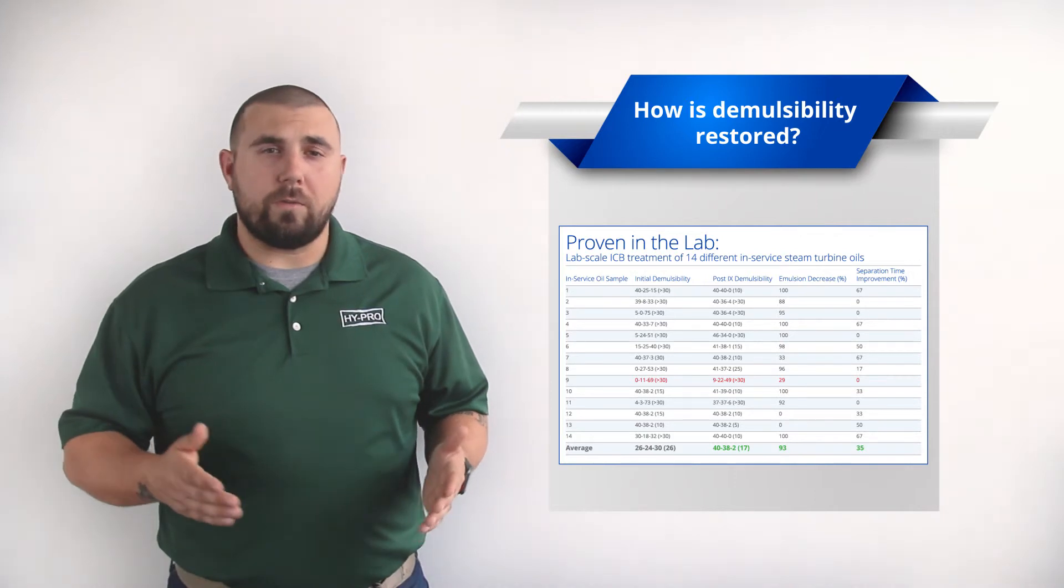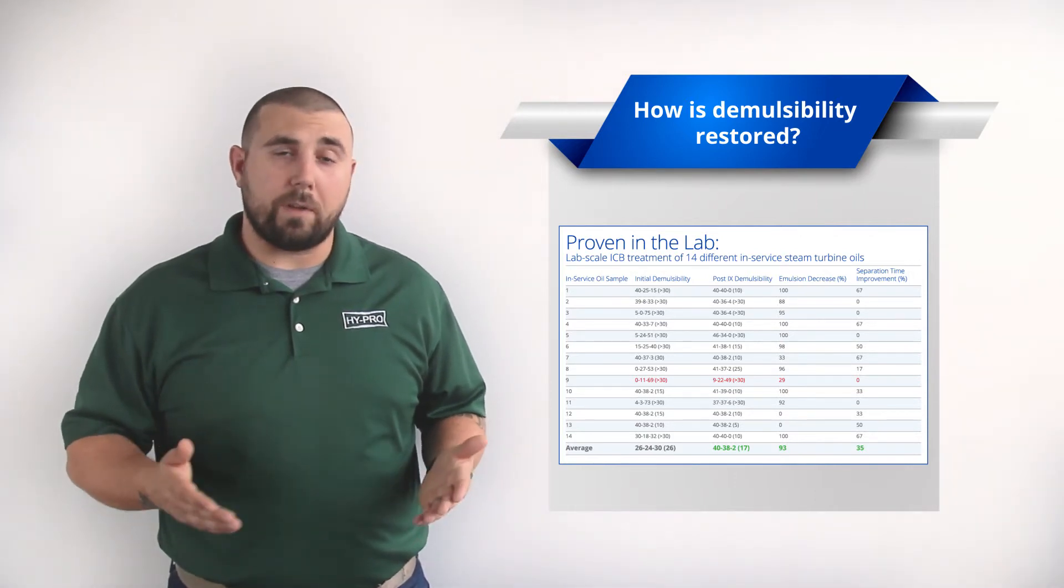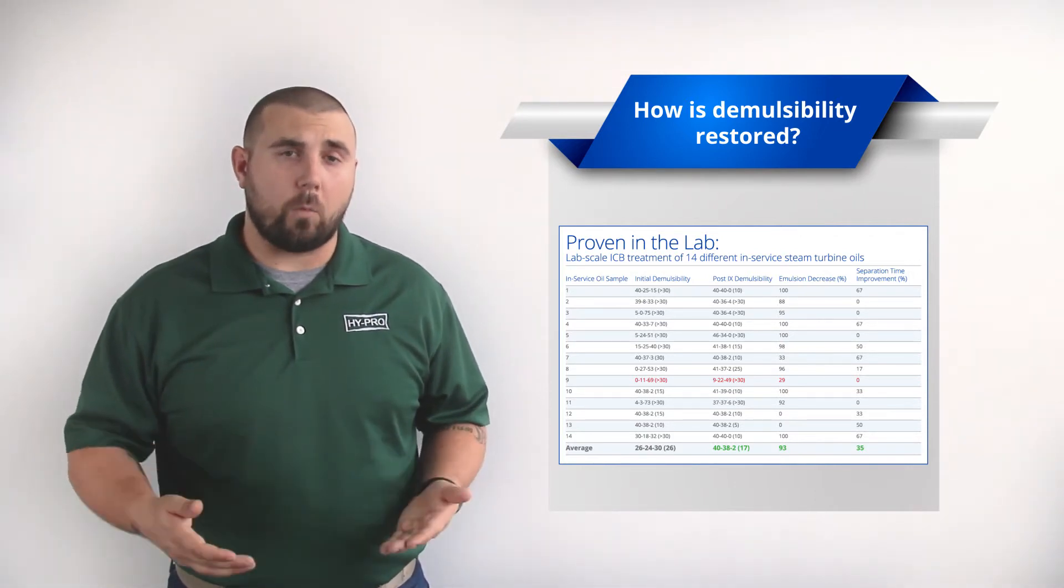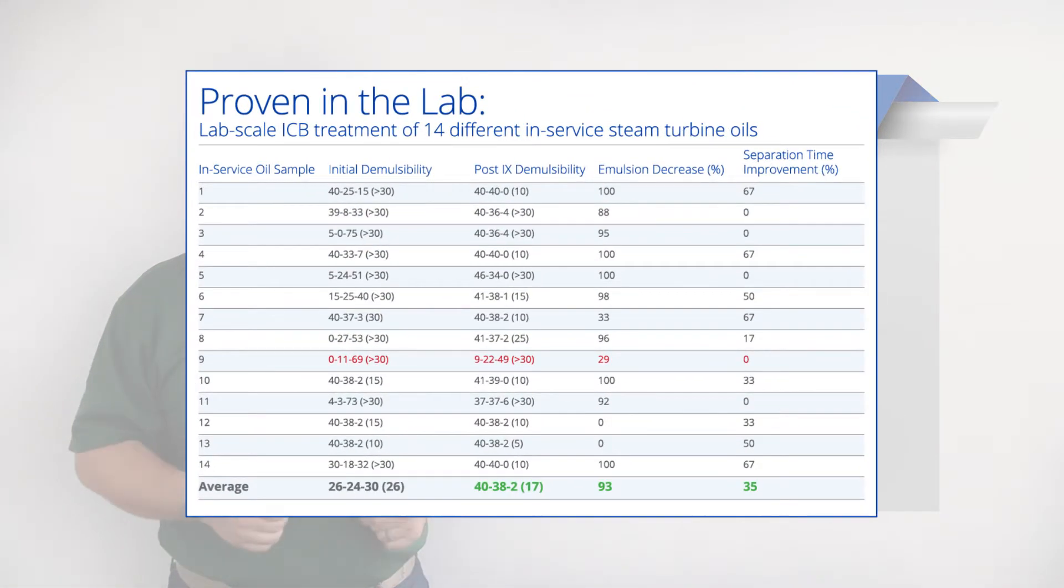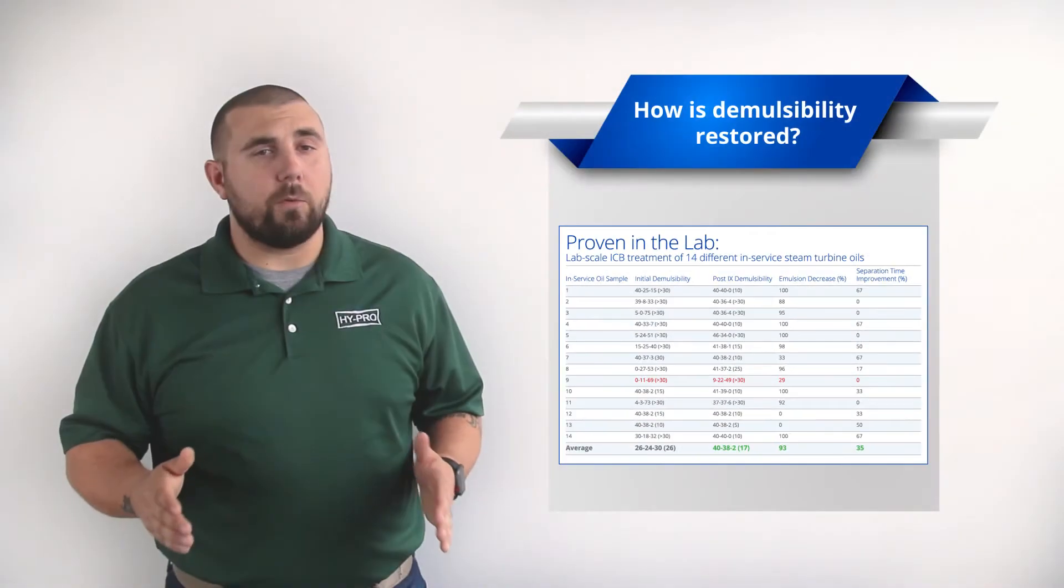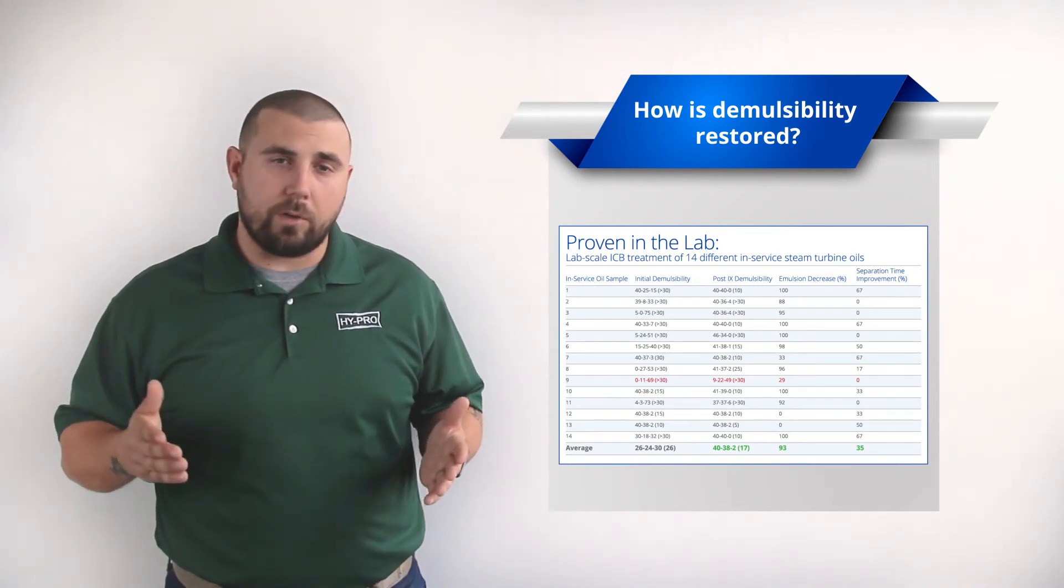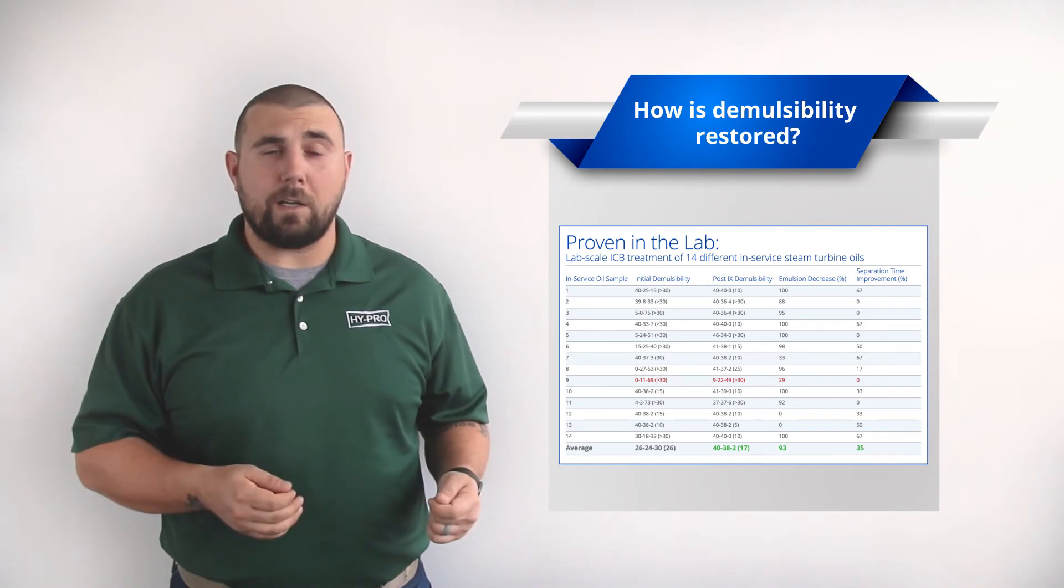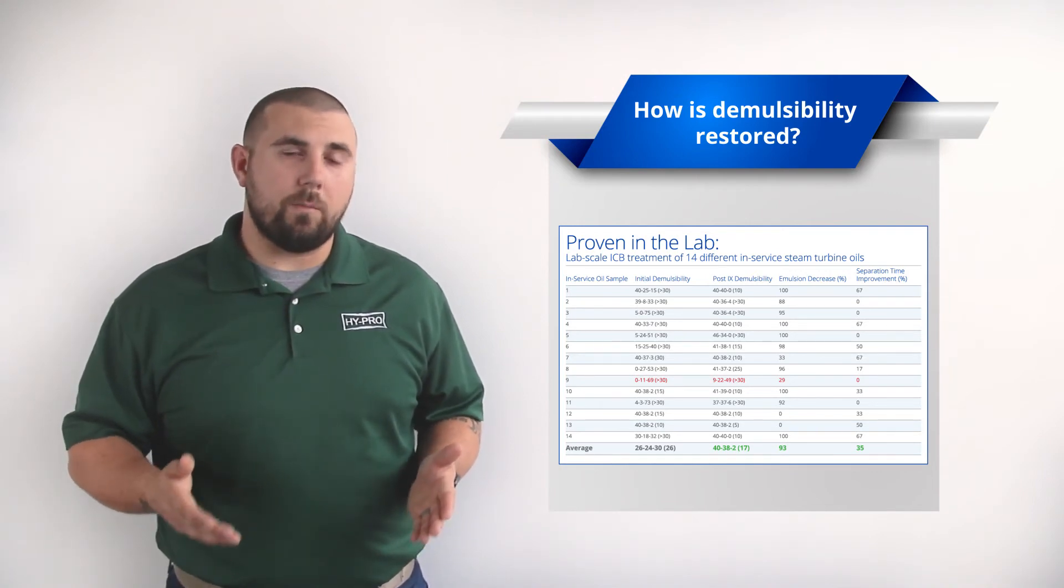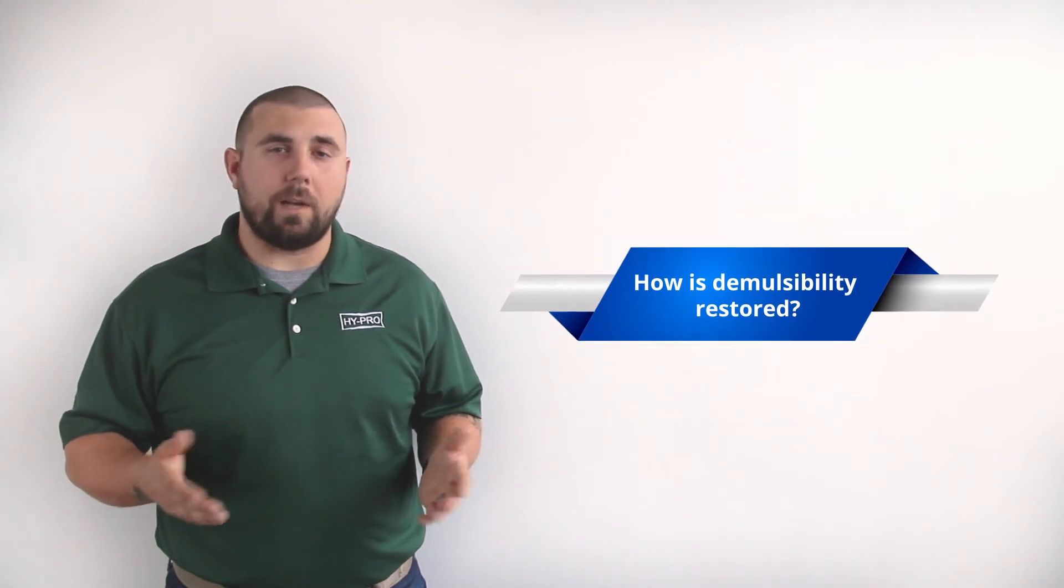In our testing, turbine oils with failing demulcibility that have been treated with ion exchange technology regain their water separating abilities of new oil. In fact, in a lab-scale treatment of 14 different in-service steam turbine oils, our ICB ion exchange technology was able to restore demulcibility in these degraded oils an average of 93%. Beyond the dramatic improvement in demulcibility, ICB technology can also include varnish removal and prevention, prevention of AO additive depletion, removal of acids and metal ions, and most importantly, oil that lasts the life of the turbine.